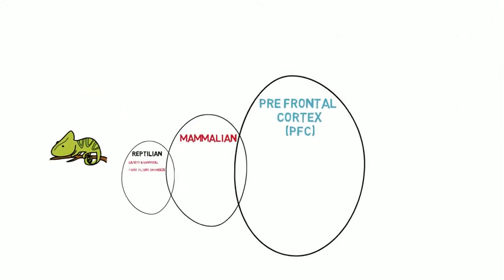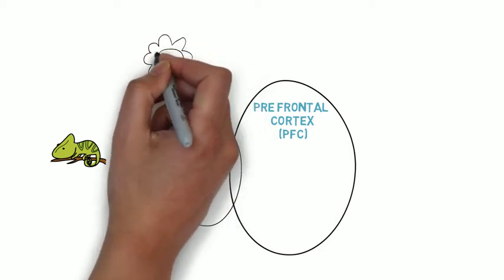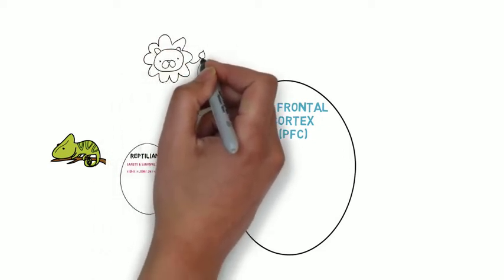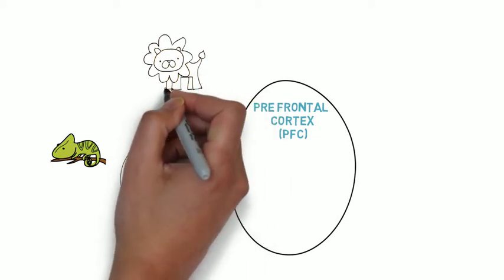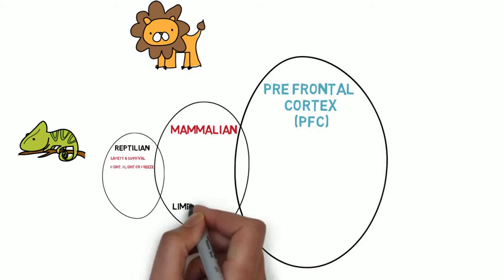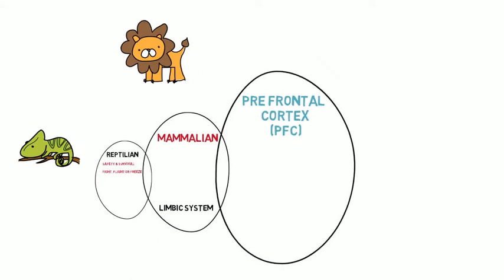The next one is the mammalian brain, and as the name suggests, it's basically mammals on the earth. So any animal that nurtures its young will have the mammalian component to it, and another name for it is the limbic system in that part of the brain, and that's the emotional area.